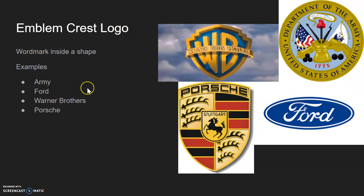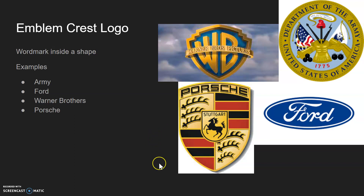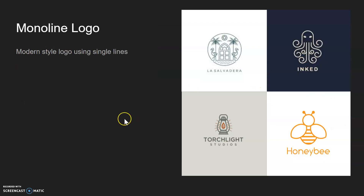Then we have the emblem/crest logo, which is a wordmark inside a shape. Examples are the Army logo, Ford — with the name inside the oval — Warner Brothers, which has a crest with 'Warner Bros. Pictures' across it, and Porsche with their crest.